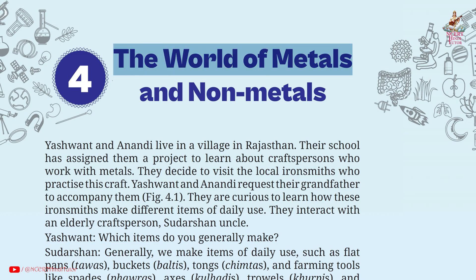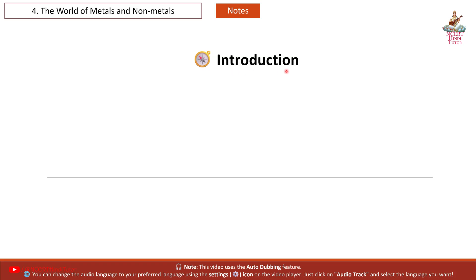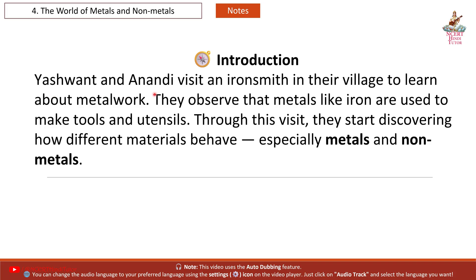Chapter 4: The World of Metals and Non-Metals — Notes and Summary from Grade 7 Science book Curiosity. Yashwant and Anandi visit an iron smith in their village to learn about metal work. They observe that metals like iron are used to make tools and utensils, and through this visit they start discovering how different materials behave, especially metals and non-metals.